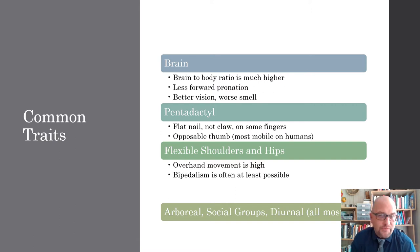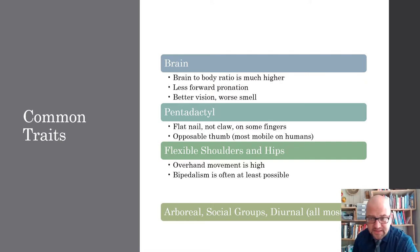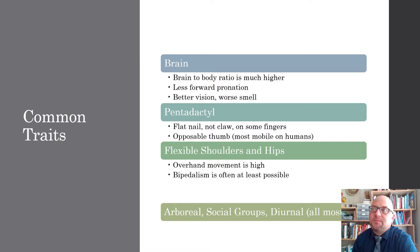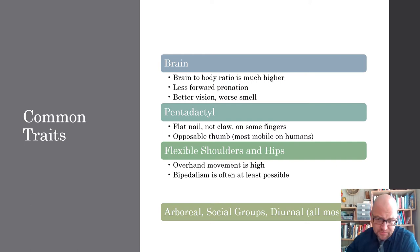Almost all primates, other than a few out of the 250, are very social. They live in social groups that have complex social hierarchies. They are also diurnal, which means they are awake during the day as opposed to nocturnal. Again, that's almost all of them — there are a few nocturnal primates, but as a general trend that's true.